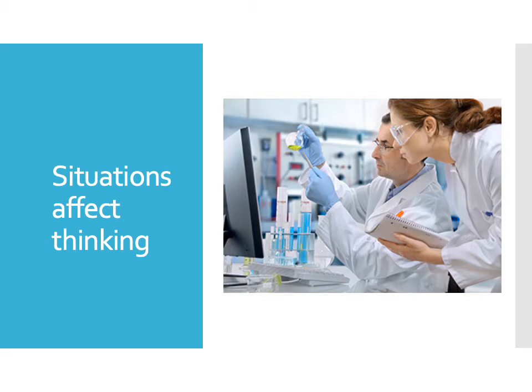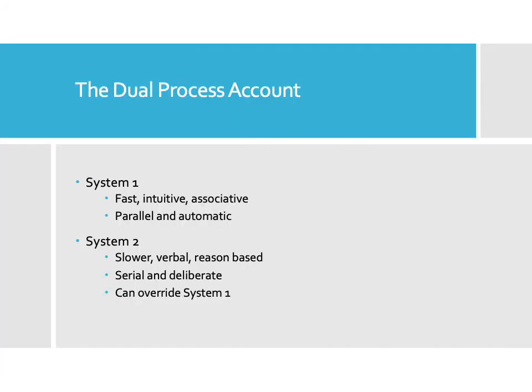That's going to be the topic of this week, and I want to frame it within the context of the dual process account. If you remember, this is where we talk about two systems: a fast system and a slower system. System 1 is the fast, intuitive, associative system — thought to be parallel and automatic. System 2 is the slower, verbal, reason-based system — serial and deliberate. It can often override System 1, but System 1 often provides output more quickly, so you have to work to override it.